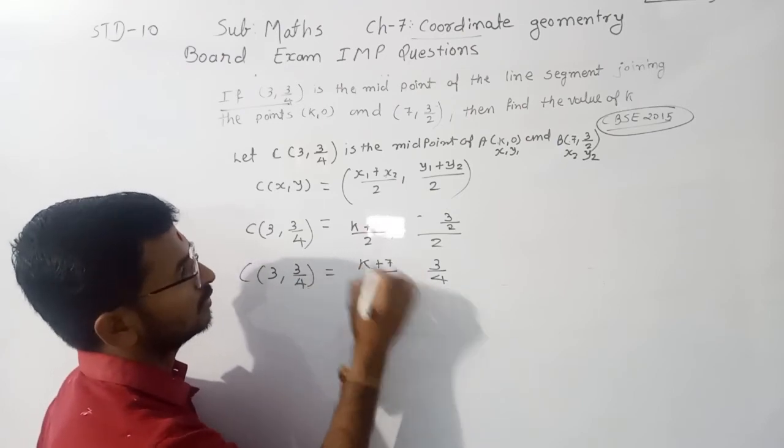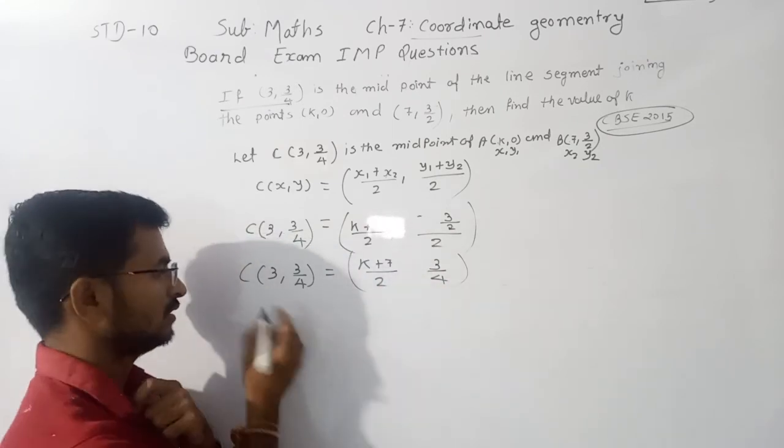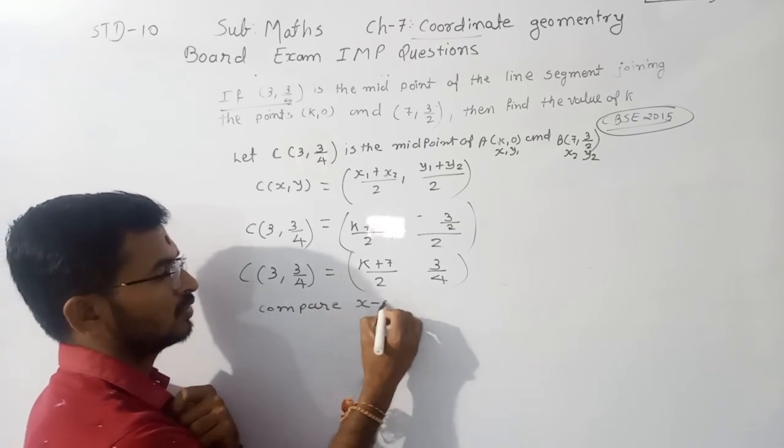Just compare X coordinate. Then 3 is equal to (K+7)/2.